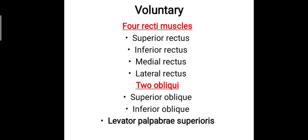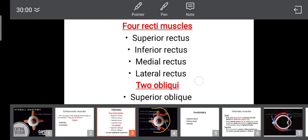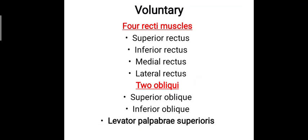The voluntary muscles include four recti muscles — namely the superior rectus, the inferior rectus, medial rectus, and the lateral rectus. There are also two obliquei, which includes the superior and inferior oblique muscles. The other voluntary muscle is the levator palpebrae superioris.